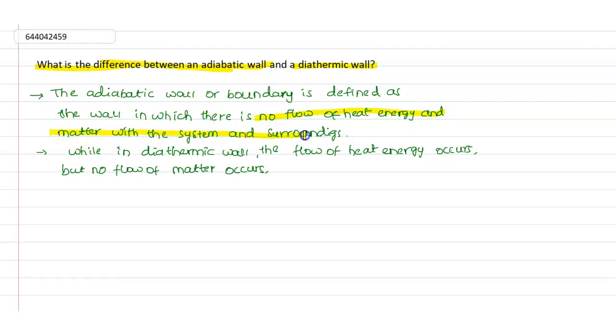no flow of heat energy and matter with the system and surroundings. So this is the difference of those, this is about the adiabatic wall or adiabatic boundary. While coming to the diathermic wall,